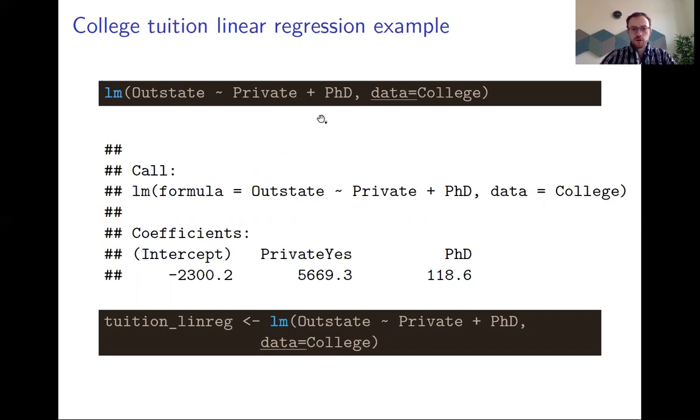If you just run this regression we will get an intercept, we will get the coefficient for a private college, and since private is a factor variable it is just either yes or no, it will already specify a reference group for us. So here the intercept is basically the value for a public university, and then private yes means that this value here, roughly 5,700, is the difference that you have to pay if you're attending a private college instead.